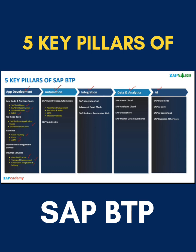When it comes to the automation pillar, automation is being sold as a bundle called SAP Build Process Automation. Under this layer, you can develop a workflow, create rules, build iRPA (Intelligent Robotic Process Automation), build automations, and do a proper process visibility dashboard — all under the same Process Automation. You also have SAP Task Center on the automation side.